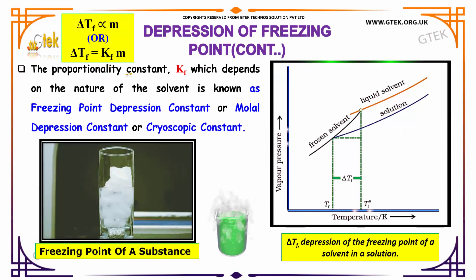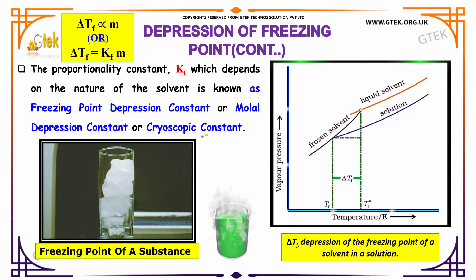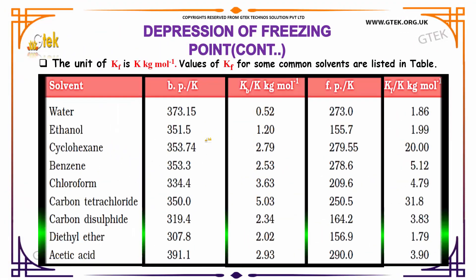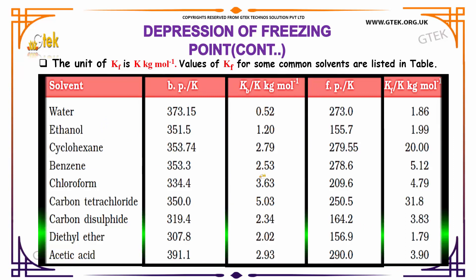The proportionality constant Kf depends on the nature of the solvent and is known as the freezing point depression constant, molal depression constant, or cryoscopic constant. The unit of Kf is kelvin·kilogram per mol. The values of Kf for some common solvents are listed in a table showing the solvent, the Kb value, the boiling point, the freezing point, and the Kf value.